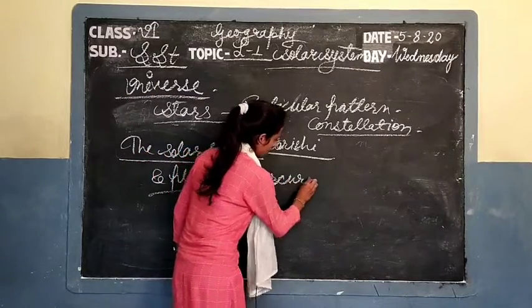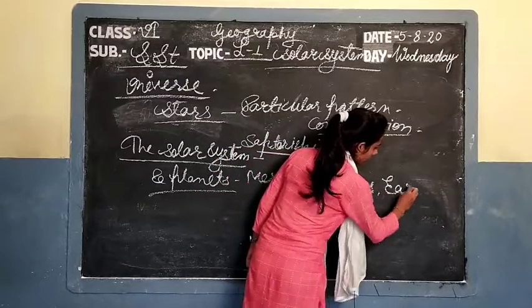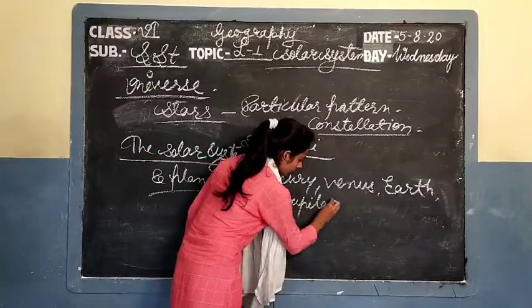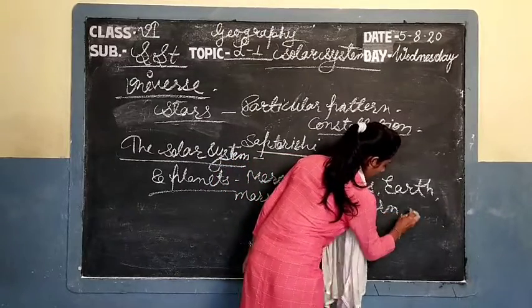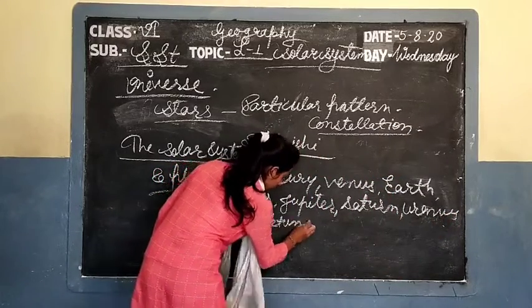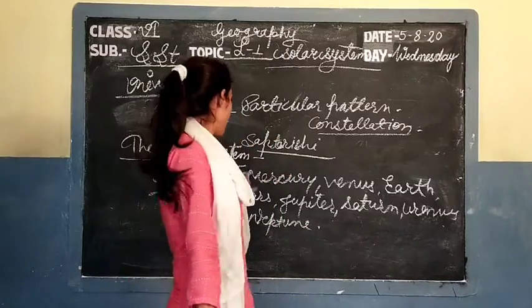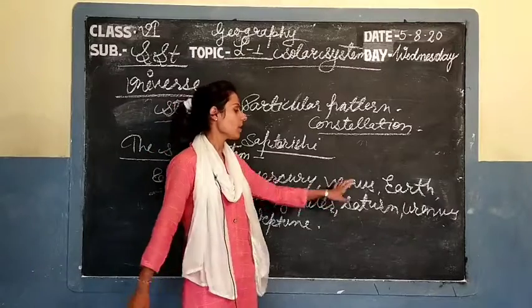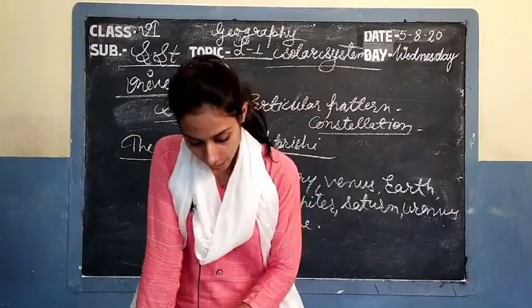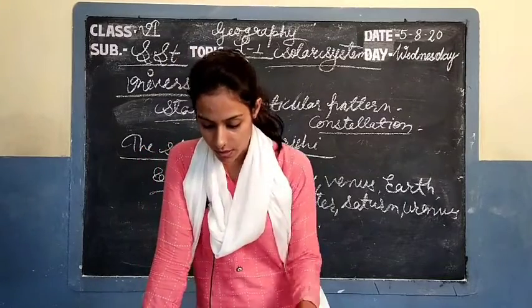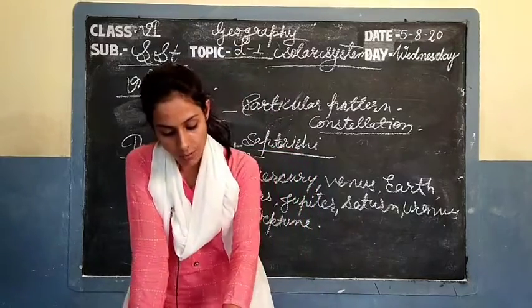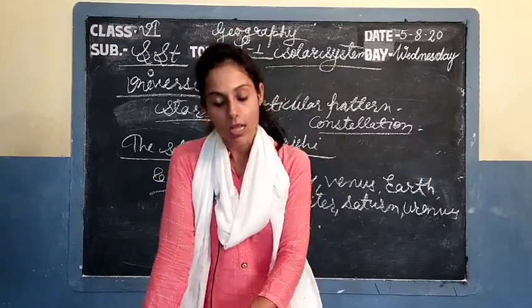The 8 planets are: Mercury, Venus, Earth, Mars, Jupiter, Saturn, Uranus, and Neptune. The solar system means the family of the sun. The sun and the 8 planets that revolve around the sun are members of the solar system.